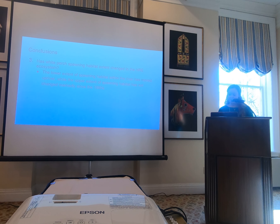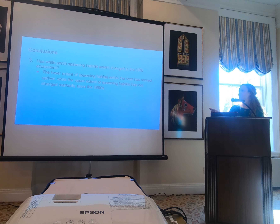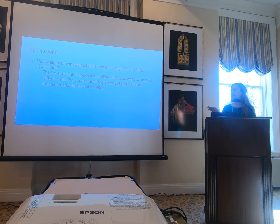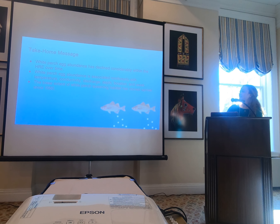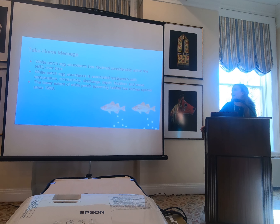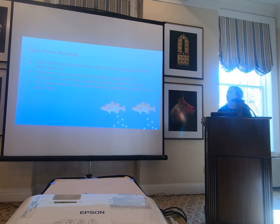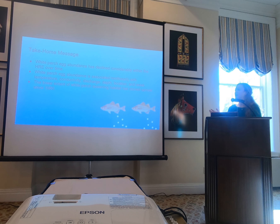To recap that final question: the lower extent shows that the white perch lower extent is shifting north, but the upper extent is not moving significantly in our time series. The take-home messages are that white perch abundance has declined considerably over time in the Hudson River Estuary, it is associated non-linearly with environmental spatial and temporal factors, and the lower extent has been shifting northward.